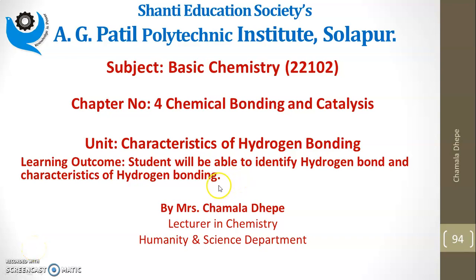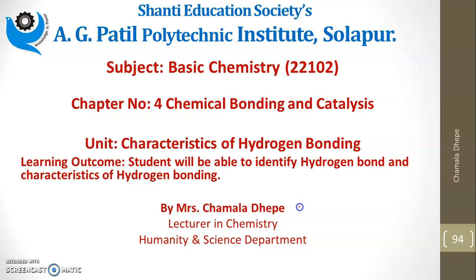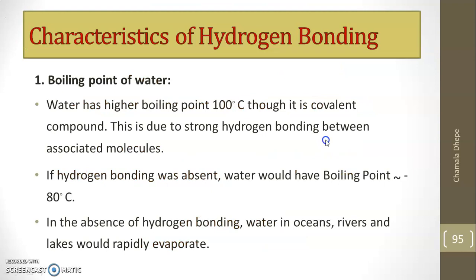In this video we are going to cover the characteristics of hydrogen bonding. In the previous video we saw the formation of hydrogen bond — how hydrogen bond is formed. It is formed between two different molecules which consist of a covalently bonded hydrogen atom and another highly electronegative atom like fluorine, nitrogen, or oxygen. Today we are going to see the characteristics of hydrogen bonding.